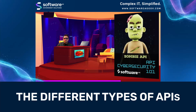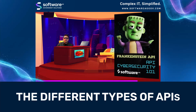Then you have zombie APIs — those are APIs that work and are in use, but haven't been updated and are probably using outdated security. And Frankenstein APIs — these are unofficial internal or external APIs that are hacked together to scrape data in various ways from systems that don't provide real APIs.